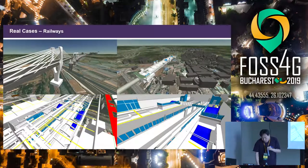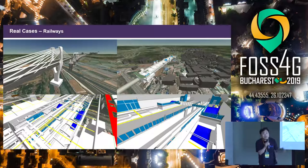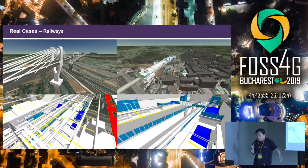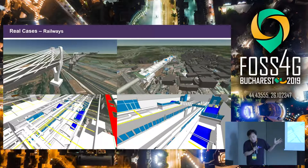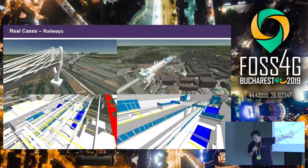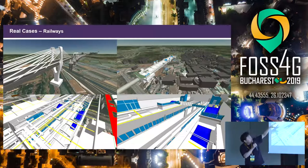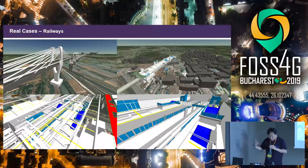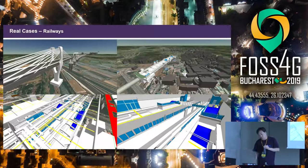We are currently involved in a railway project. The IFC building information modeling file for railways is totally different from buildings — it's very long and the file size is quite large, so it's a really challenging project, but we are doing well. The length of this BIM model is around two kilometers, showing station information, bridges, posts, and lines all in one file. We expect to show you the completed case next year.